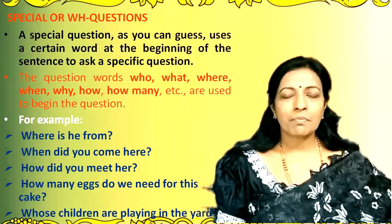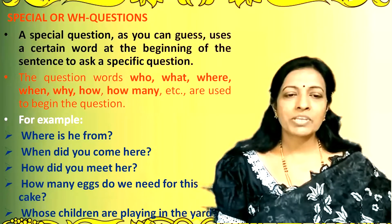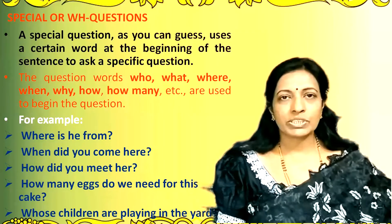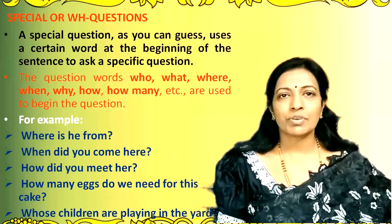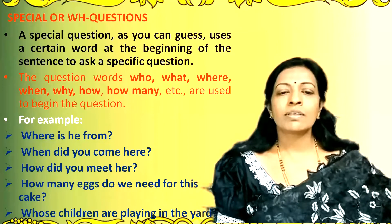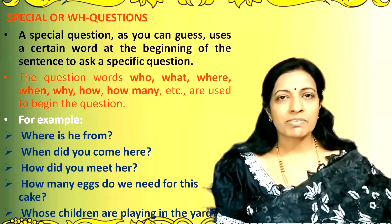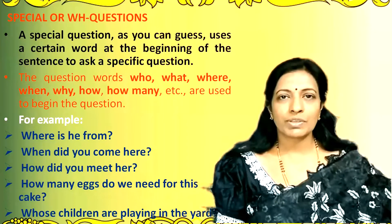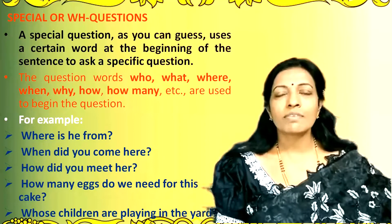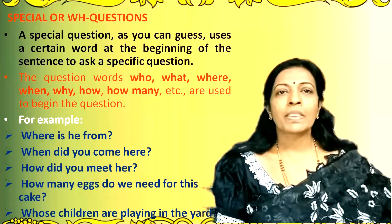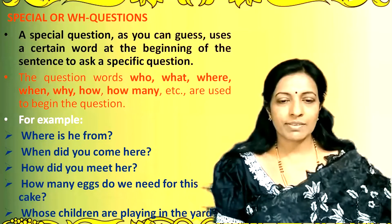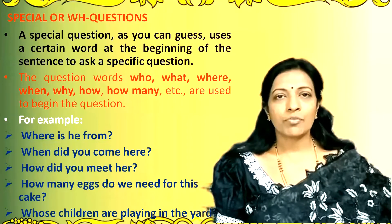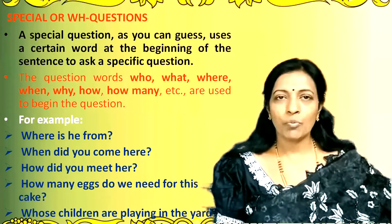The next type of questions are the special questions or WH questions. These are questions which use a certain word at the beginning of the sentence so that you can ask a specific question. These words which are used at the beginning of the sentence are known as question words. Some of the commonly used question words are: who, what, where, when, why, how, how many, etc.